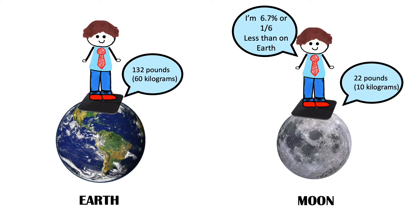The gravity on the moon is only one sixth of earth's gravity. Our moon is about a quarter the size of earth, and because it is smaller, the moon has less gravity. So if you weighed 132 pounds or 60 kilograms on earth, you would weigh about 22 pounds or 10 kilograms on the moon.